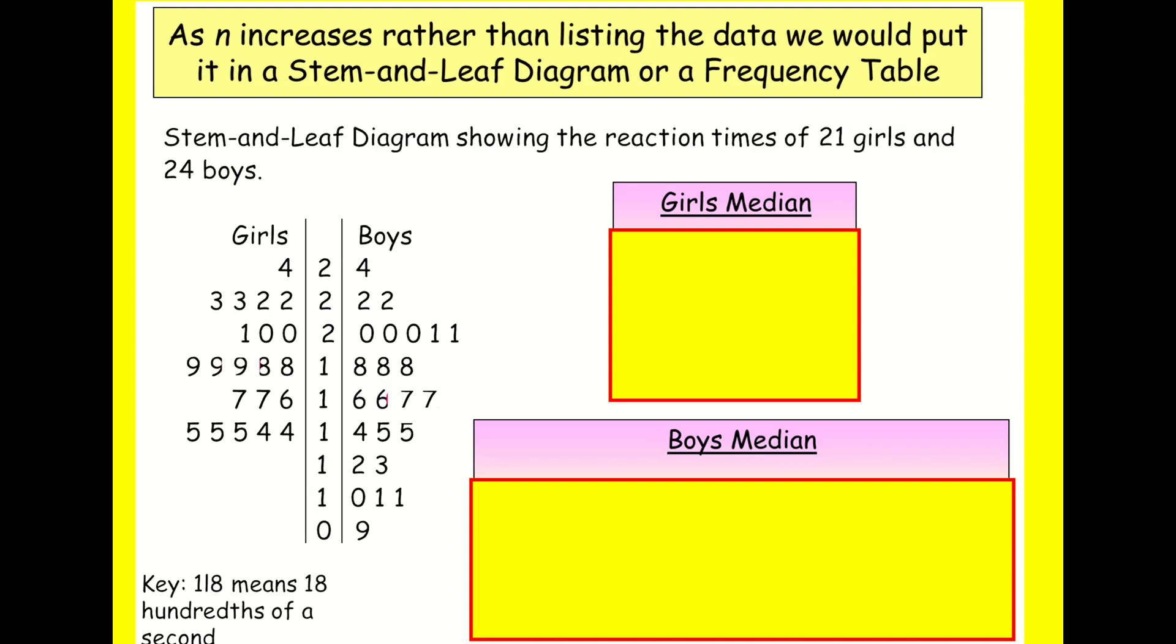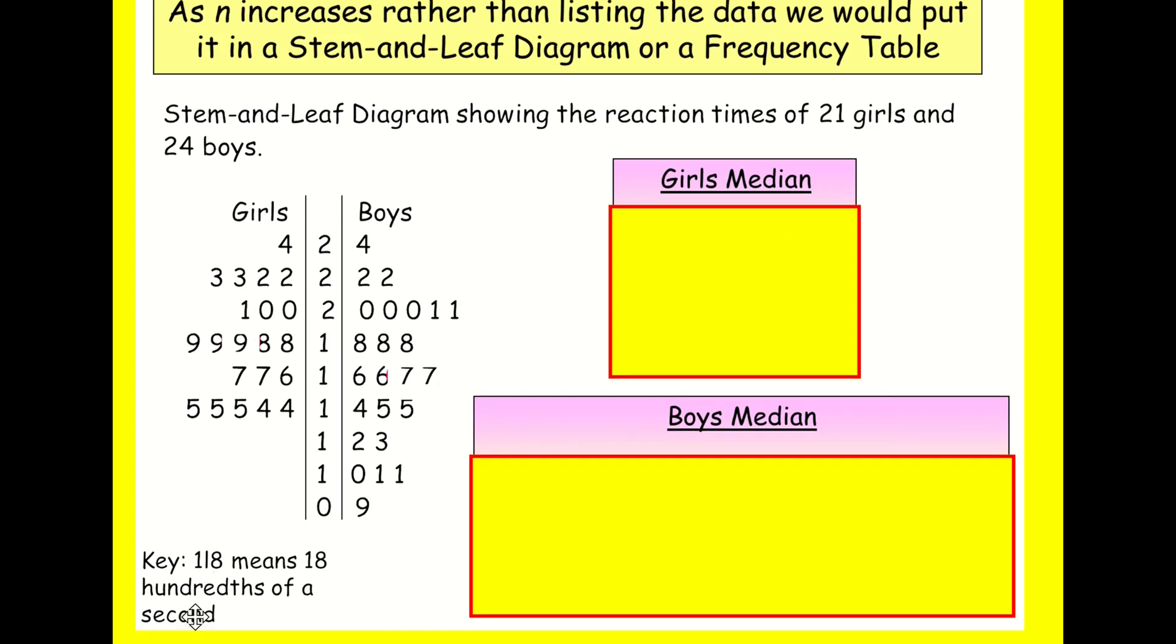We've looked at finding the mean mode median from lists of data, but we've not yet taken that into stem and leaf, an idea that we've introduced in A-level. So here's a stem and leaf diagram, and actually it's two stem and leaf diagrams combined. So we can compare the data. We've got the girls on the left and the boys on the right. This is a reaction time, and it's in hundreds of seconds.